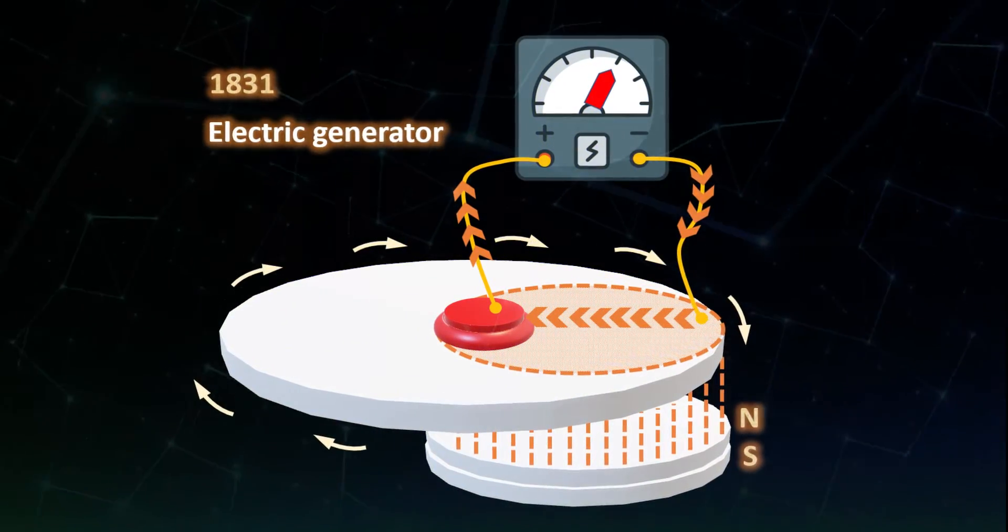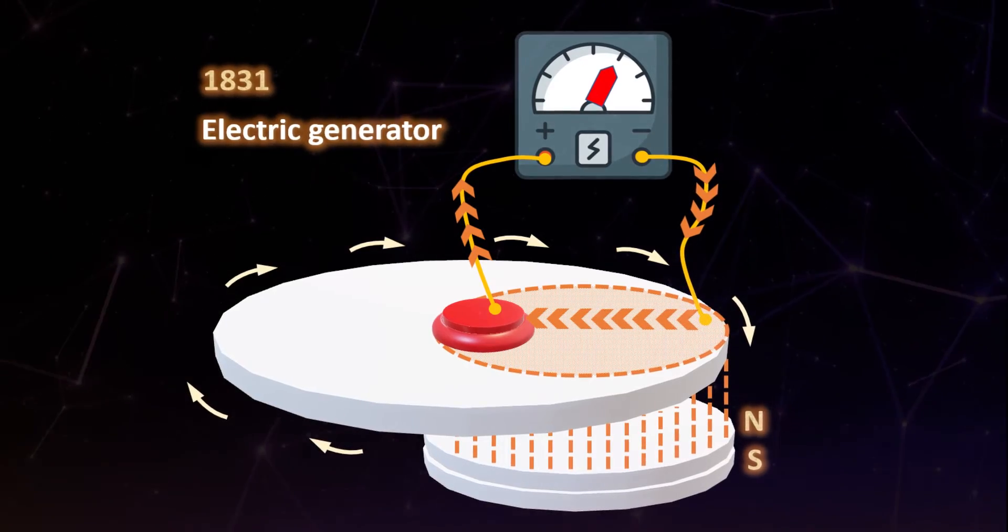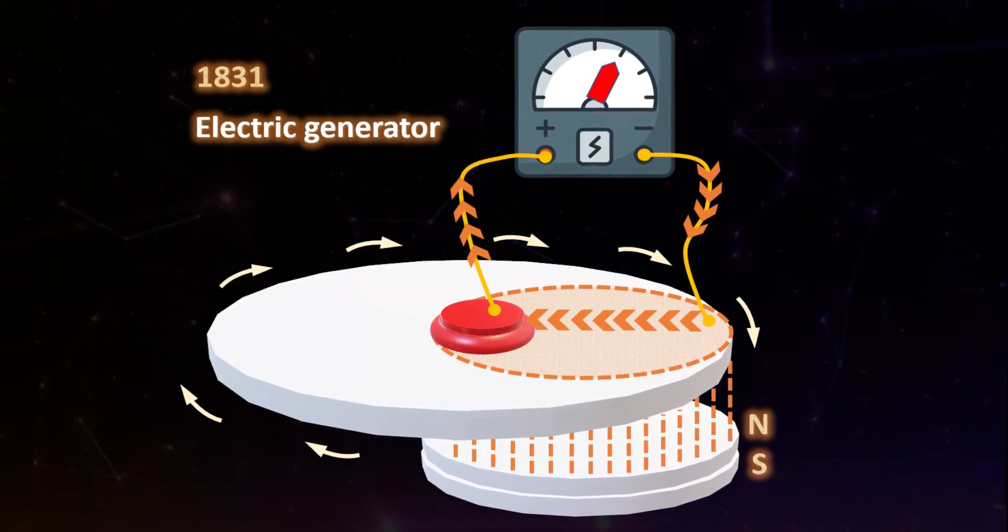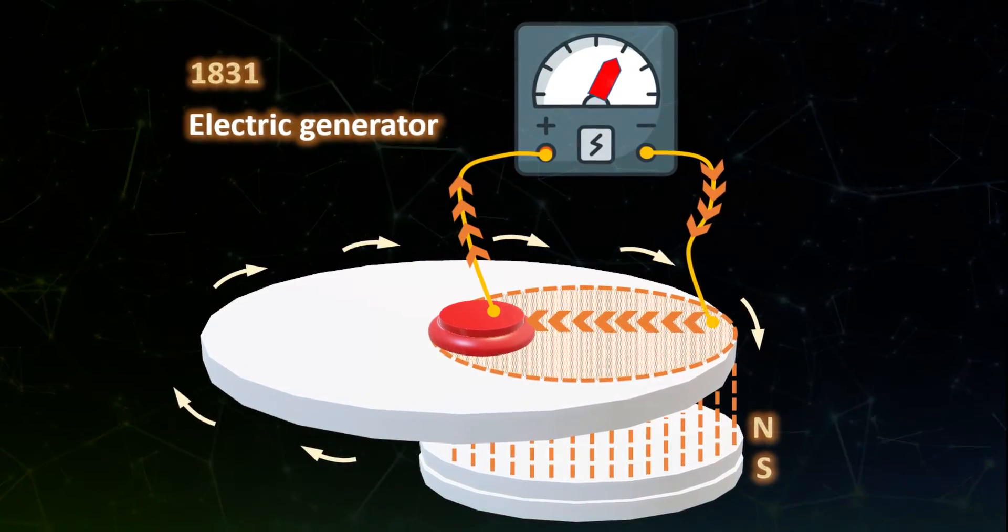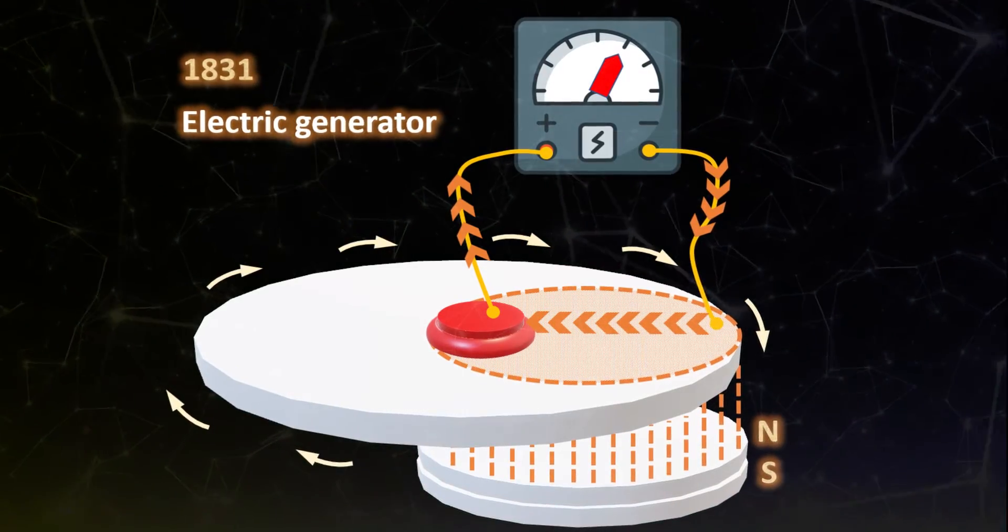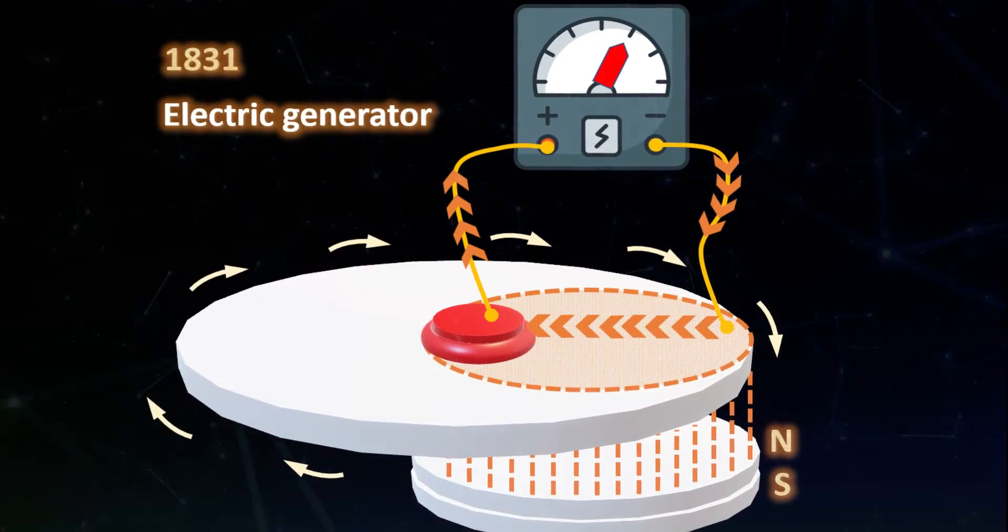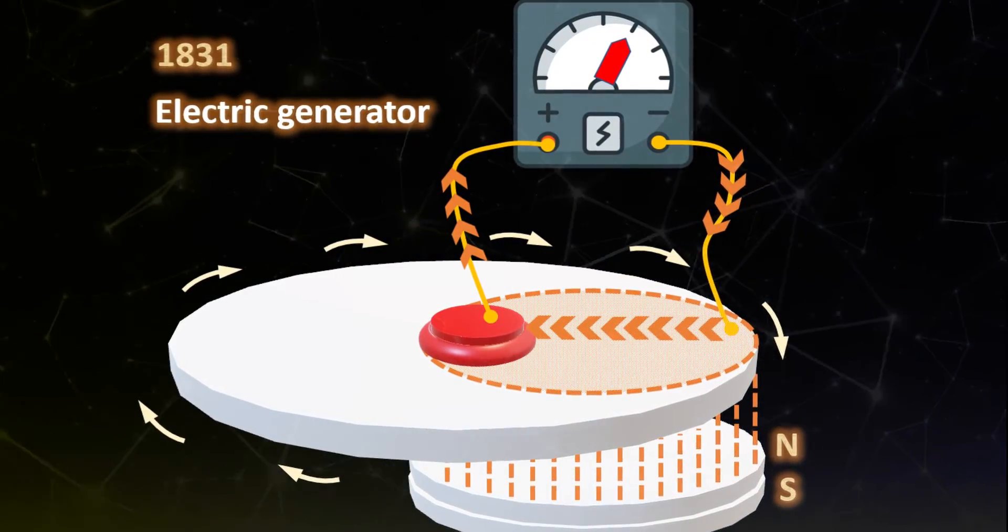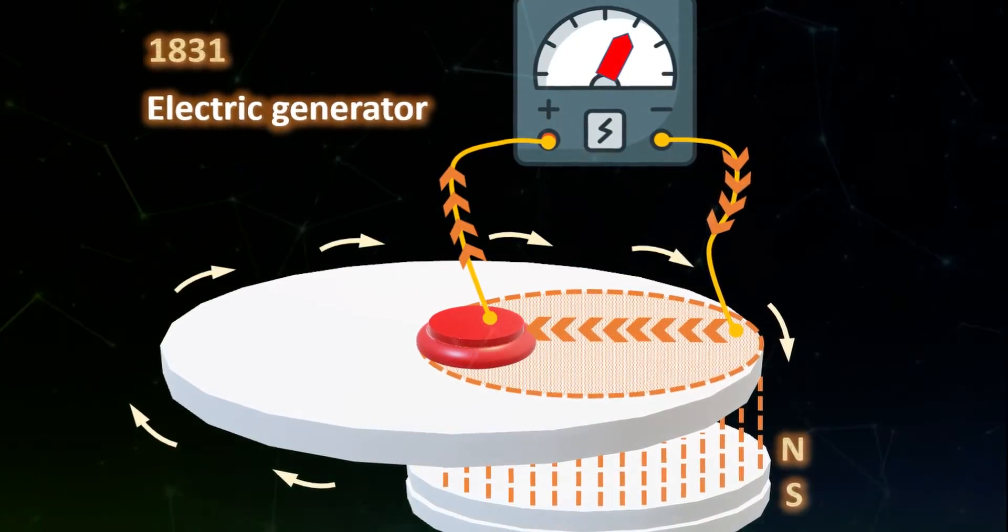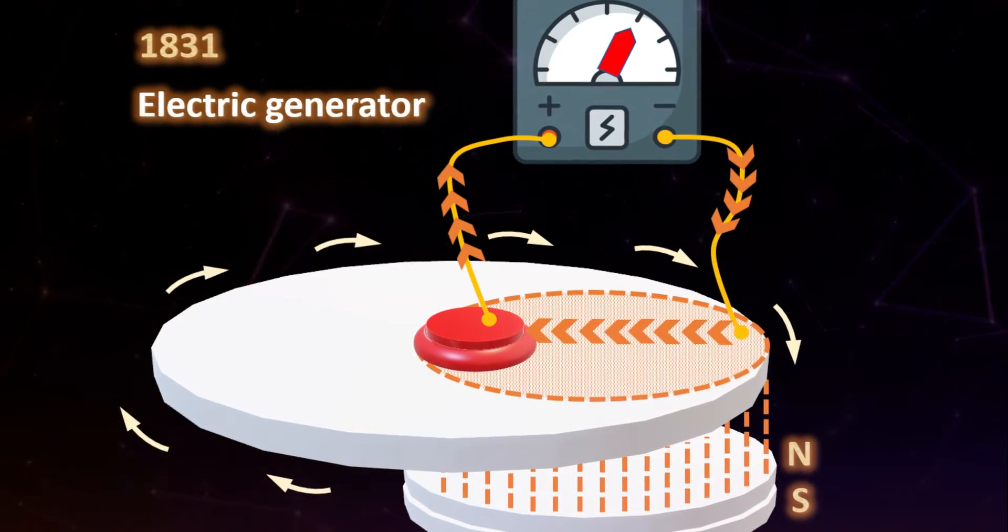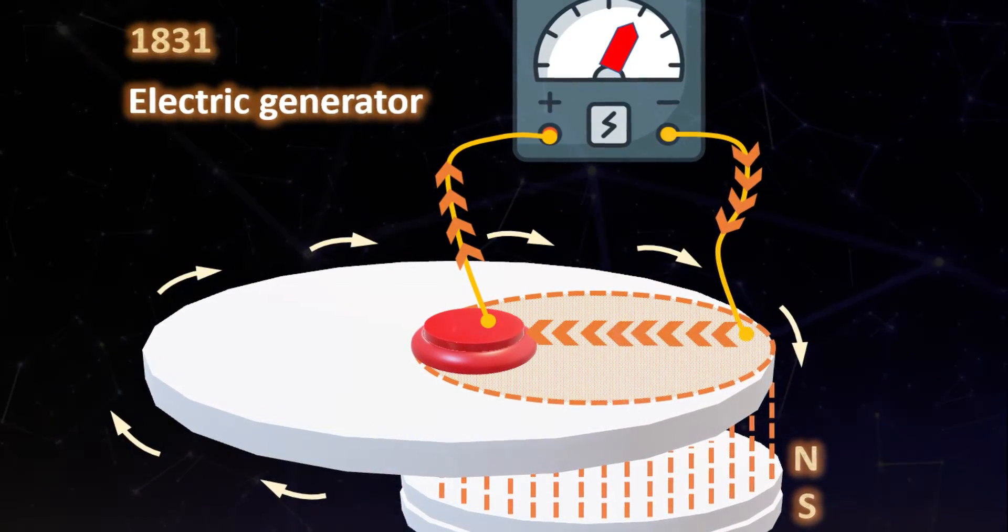A decade after making the first electric motor, Faraday made the world's first electric generator or dynamo. The copper disc while rotating is constantly cutting the magnetic field lines emanating from the magnet which according to Faraday's law would establish an electromotive force. Since the disc is consistently cutting the field lines in the same manner, the current flow is therefore constant.